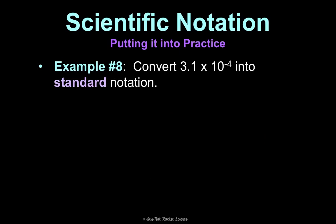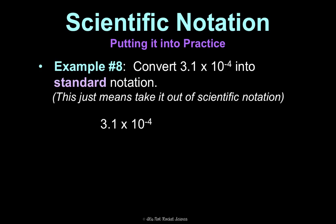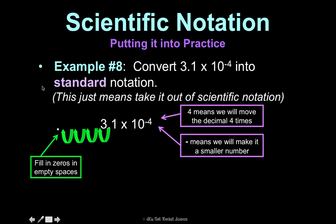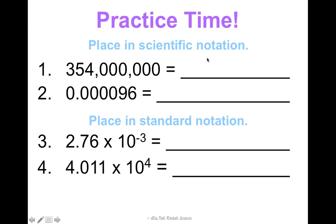Let's try another. Convert 3.1 times 10 to negative 4 into standard notation. So, we're just taking it out of scientific notation. So, I'm going to move it 4 times. And negative means I'm going to make this a smaller number. So, this time, I'm going to go this way. So, 1, 2, 3, 4. That's where my new decimal is going to go. Now, what goes here? You just fill those in with zeros. And then, rewrite. 0.00031. Now, if you feel better going one direction versus the other, you can always double check. So, move this back and see if you can get it back into the scientific notation you started with.